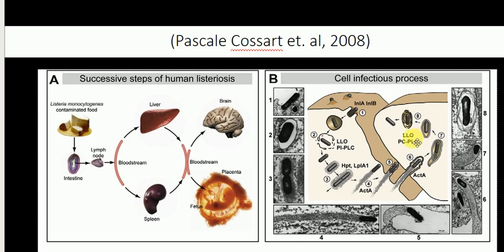The bacteria is then freely available to infect other uninfected cells and to replicate. So in summary, at the cellular level: the virulence factors internalin A and internalin B interact with host factors — internalin A specifically with human E-cadherin and internalin B with c-Met. The bacteria is trapped inside the vacuole, which is lysed by listeriolysin O.